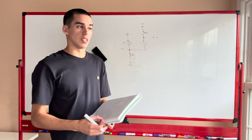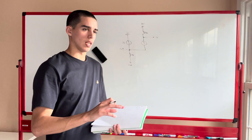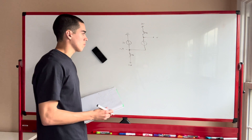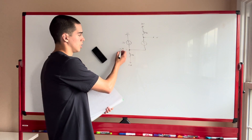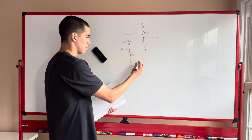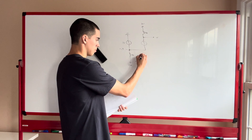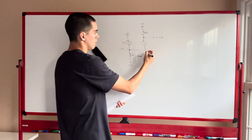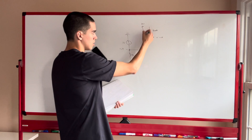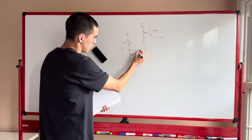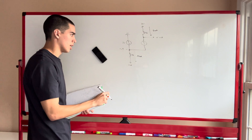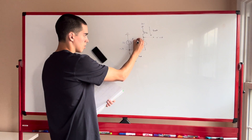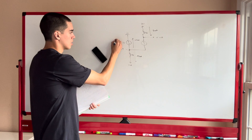If the diode is off, it's an open circuit with no current. But assuming it's on, we're at negative 0.7 volts here, giving a current of 9.3 over 10 kilohms, or 0.93 milliamps. And being at negative 0.7 here means zero here, so the current through the 5-kilohm resistor is 10 over 5 kilohms — 2 milliamps.